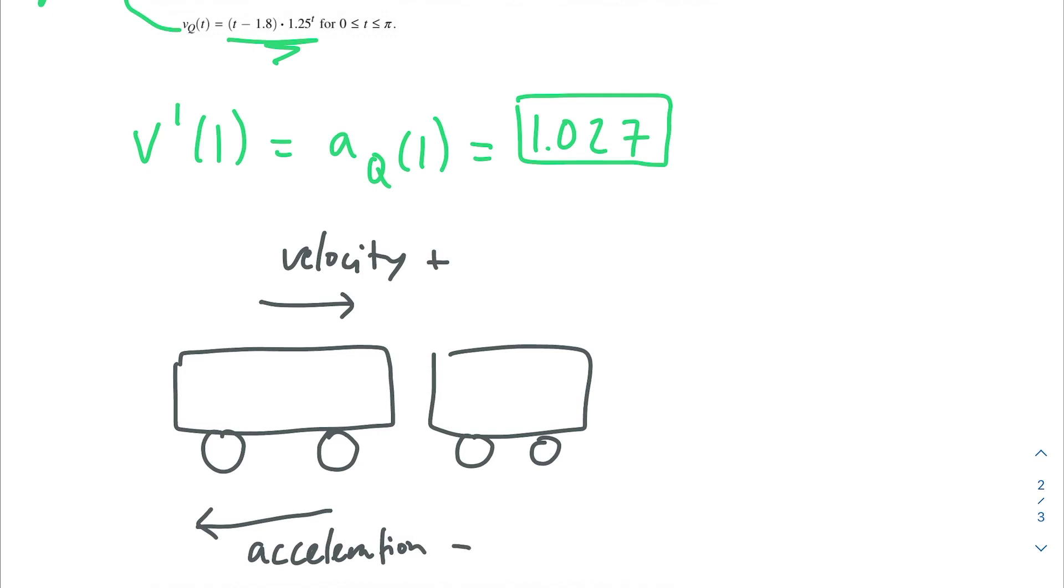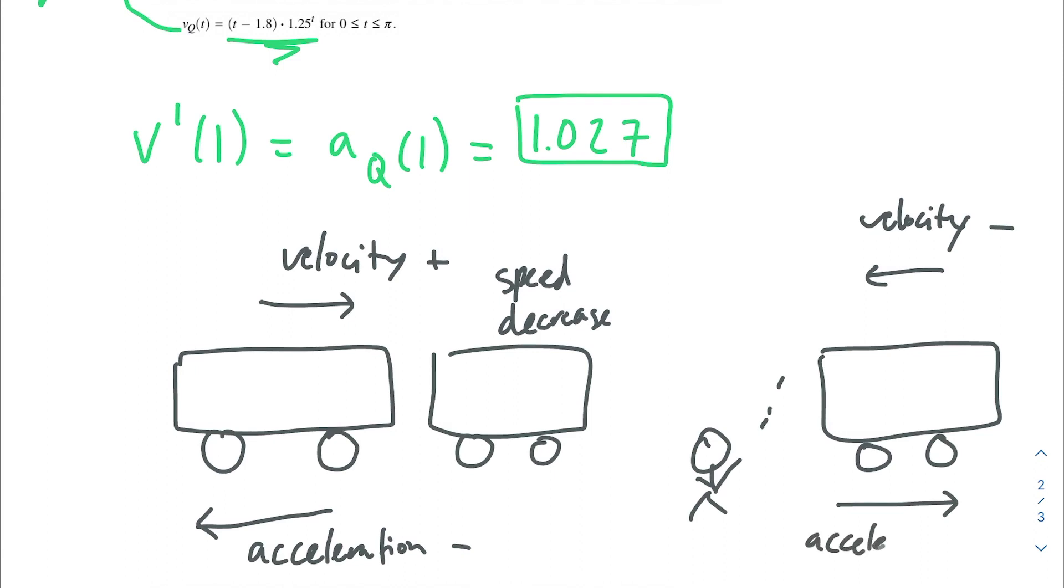You're accelerating in the negative direction. As a result, your speed is going to decrease, right? Another situation that might happen is, let's say, you're backing up, so your velocity is negative. And then let's say there's maybe a person walking behind you and you have to slam on the brakes again. In this case, your car is actually accelerating in the positive direction and your speed is also decreasing.